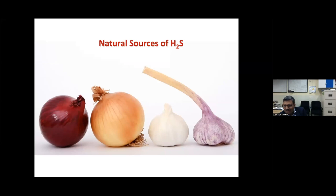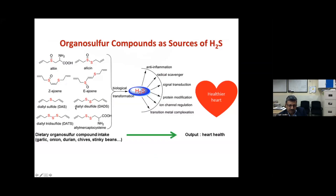We have long known that onions and garlic are good for cardiovascular health — because they contain organosulfur compounds that get transformed in the body to generate H₂S, which is then absorbed. H₂S in the body comes from both endogenous biosynthesis and exogenous sources. Gut bacteria also generate H₂S that can be absorbed. Importantly, the amount of H₂S needed for protective effects is much lower compared to most therapeutic molecules.